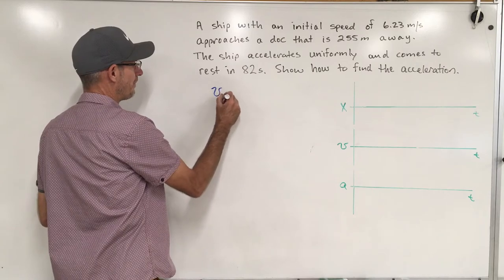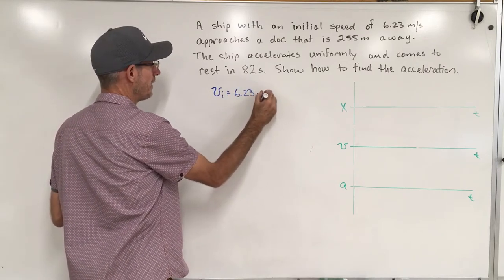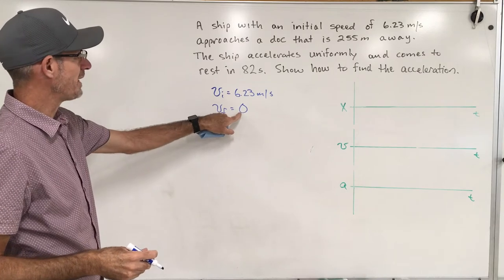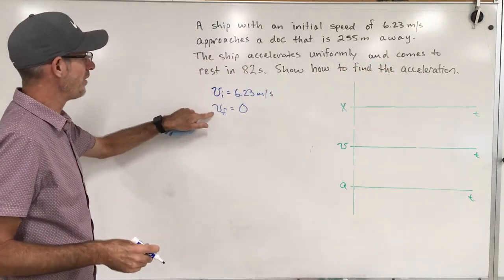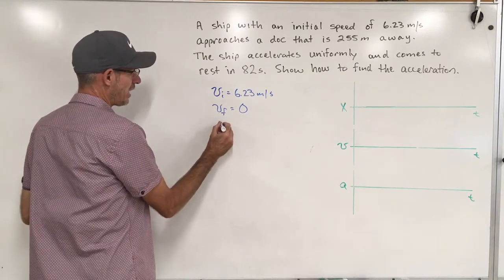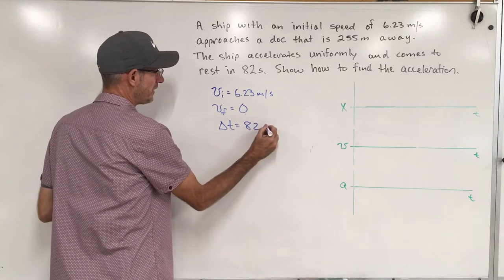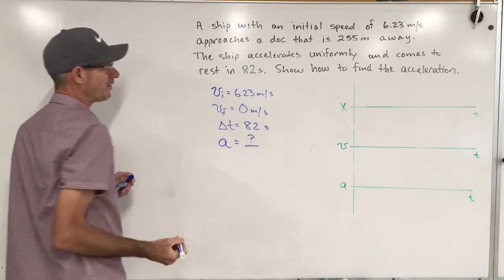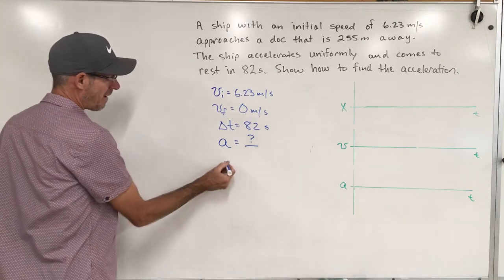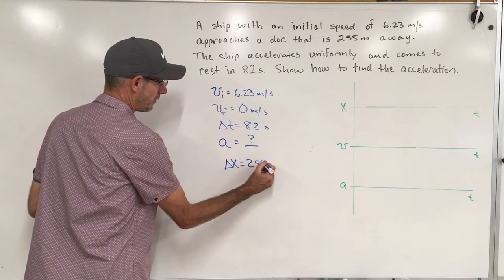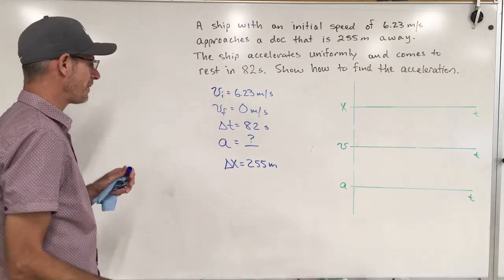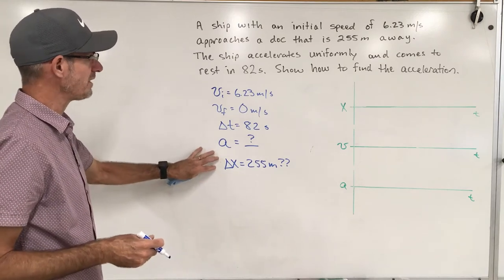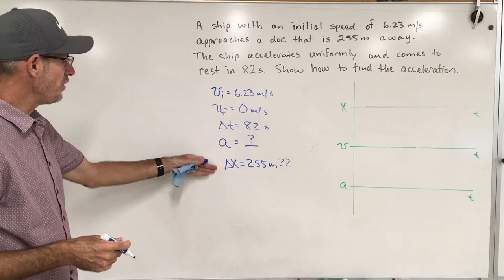When we think of our five UAM variables, we have an initial velocity of 6.23 meters per second and a final velocity of zero — the ship comes to rest, so we know it eventually stops moving. We know the change in time is 82 seconds, and we're looking for the acceleration. The 255 meters is noted, but we're not sure if the ship made it all the way to the dock, so we may not use that in our calculations.